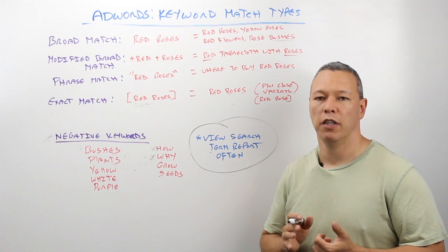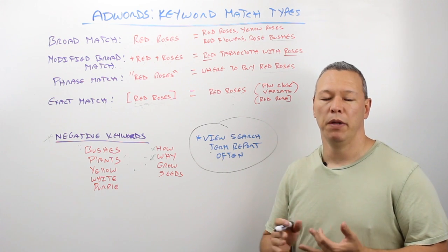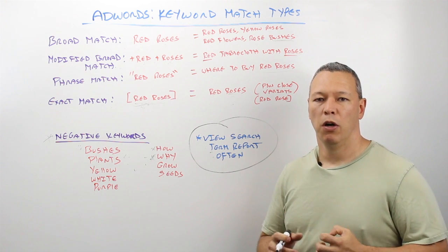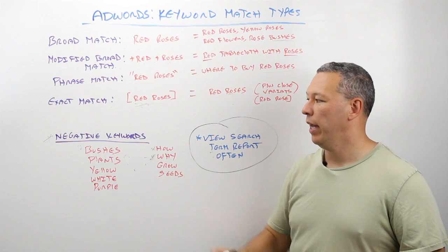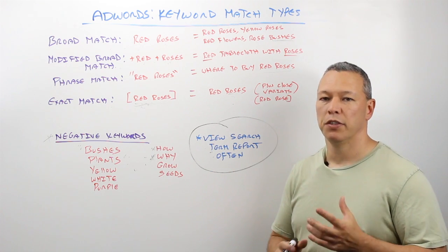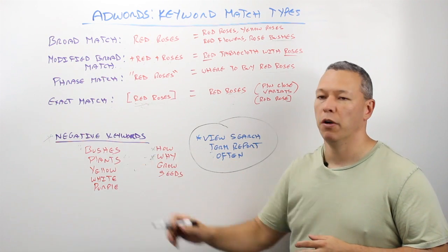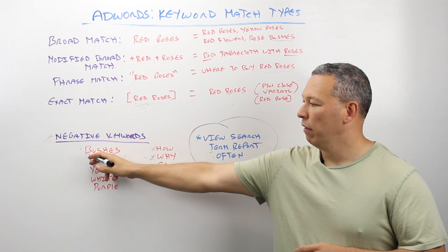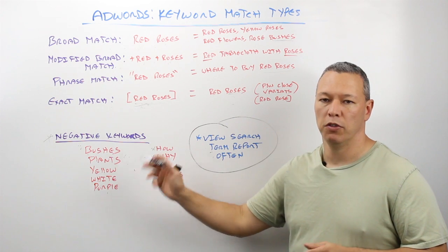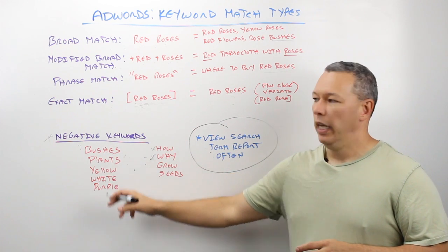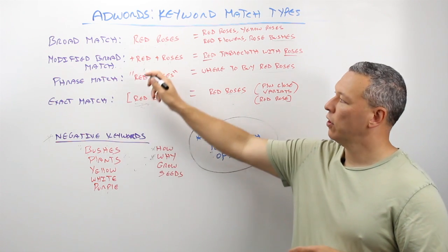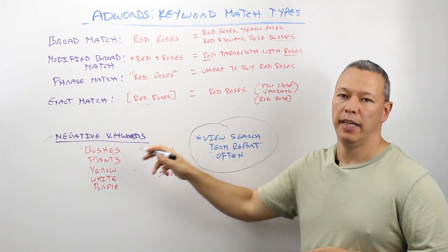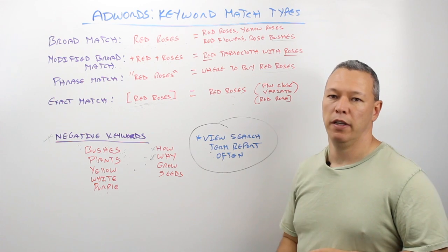Number one, you need to use your search term reports often — that might be weekly if you have a lot of clicks, say hundreds per week, or at least monthly if you have a smaller budget. The search term report gives you the list of actual search terms people typed into Google that triggered your ad. That's where you can find ones that aren't relevant and start pruning them out using negative keywords. There's a section in AdWords that lets you add negative keywords — for instance, if someone searches 'red rose bushes' and you've added 'bushes' as a negative keyword, even broad match will not trigger because Google knows not to show your ad when that word is in the query.